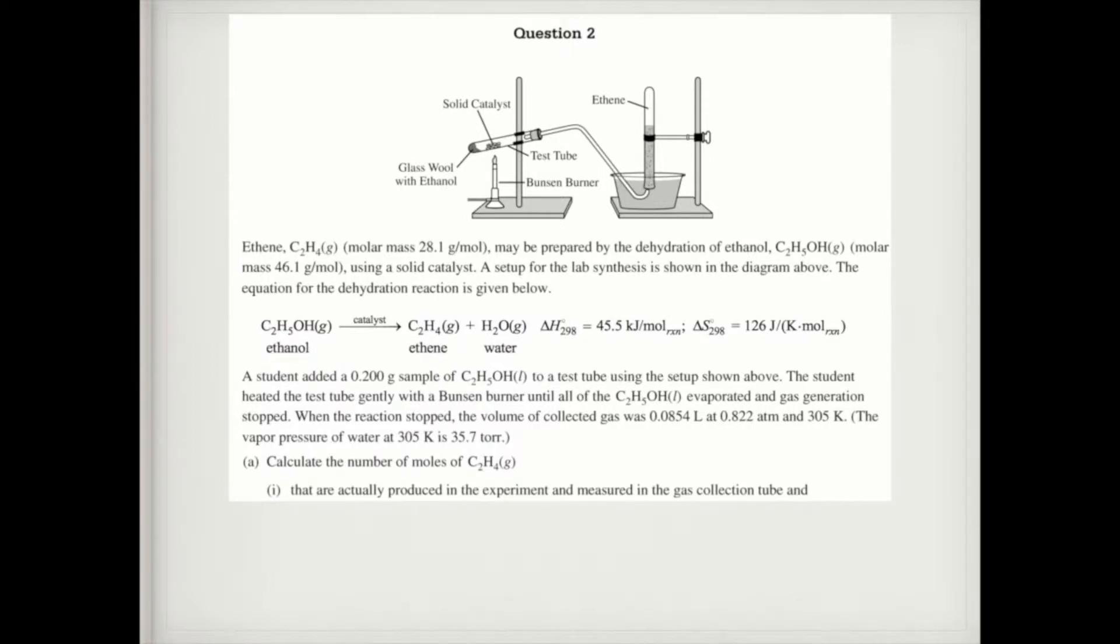The student heated the test tube gently with a Bunsen burner until all of the ethanol evaporated and gas generation stopped. When the reaction stopped, the volume of gas collected was 0.0854 liters at 0.822 atmospheres and 305 kelvin. It tells you the vapor pressure of water is 35.7 torr. So keep in mind, just like what we did in the lab, this is a collecting gas over water question. Remember, it's not only the pressure of ethene in there, but also you have vapor pressure from water, so we have to take that into account.